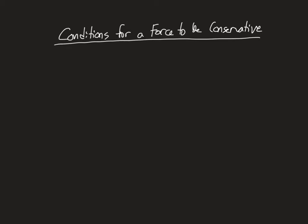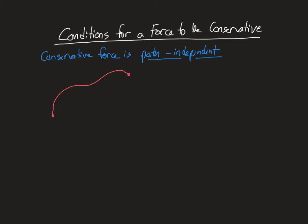Hello everyone, Professor Dustin here. In this video I'm going to talk about the conditions for a force to be conservative. You're probably already aware what it means for a force to be conservative — usually what we say is that the force is path independent. That path independence means that no matter what path you take to get from the initial state of your system to the final state, the work done by that force is not going to depend on the path taken.